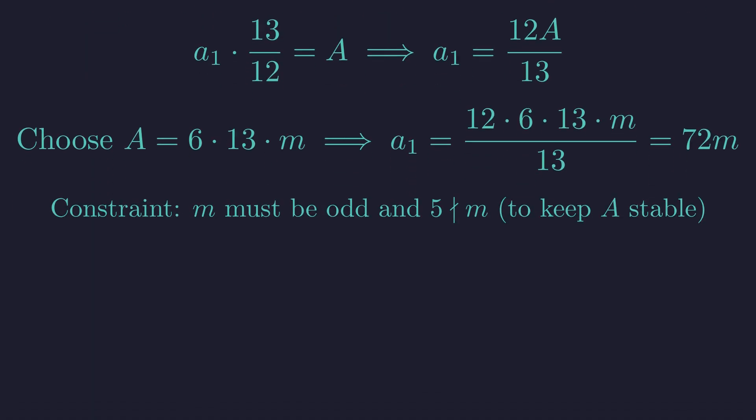For A to be stable, m must not be divisible by 2 or 5. We also must verify that A1, which is 72m, has the required divisor structure. Since 72 is divisible by 4, 8, and 9, and m is odd, the smallest divisors are indeed 2, 3, and 4.